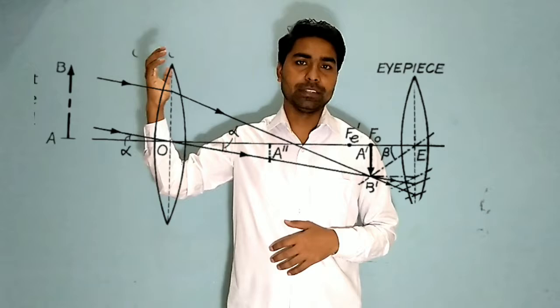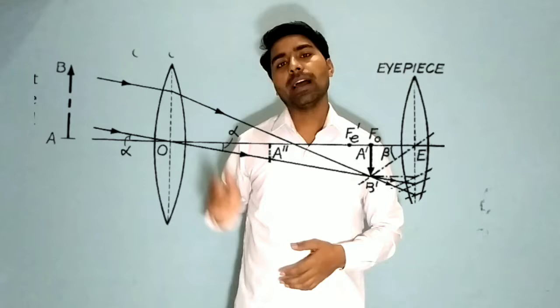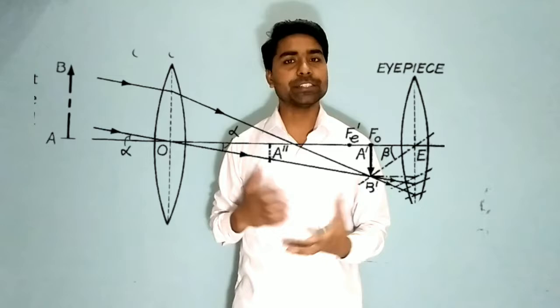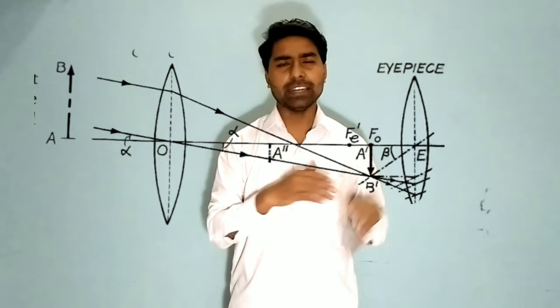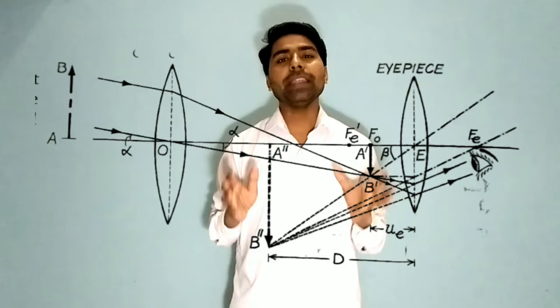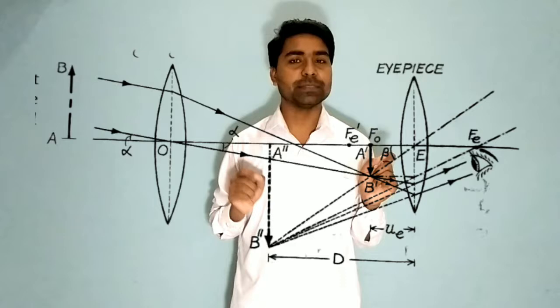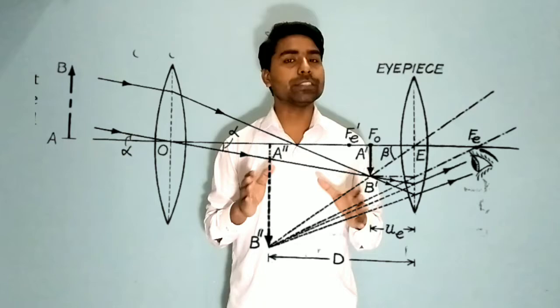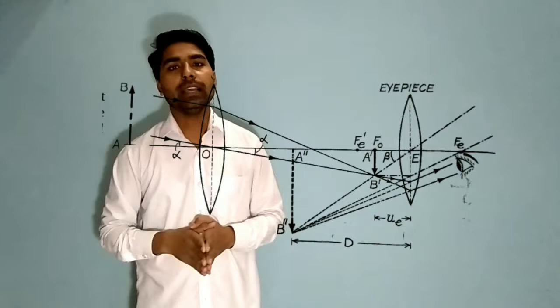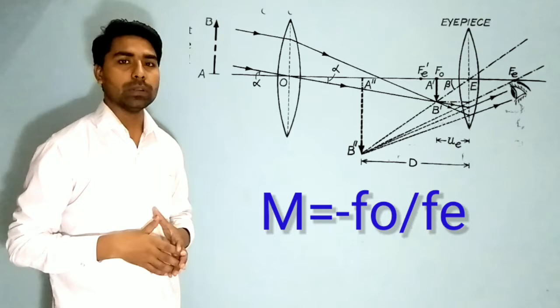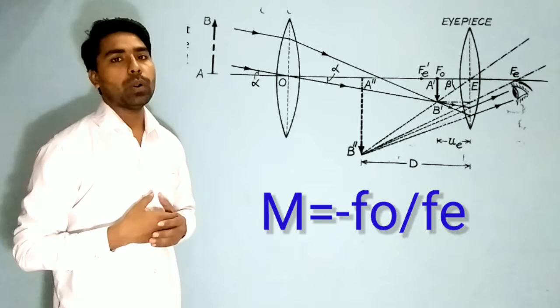In the refracting type telescope, the object is at infinity, meaning at a very far distance, and the rays coming from that object reach the objective lens. This objective lens has a larger focal length than the eyepiece lens, and finally you get a magnified image. The key point is that in this astronomical refracting telescope, the objective and the eyepiece both have different focal lengths, and this telescope has a magnifying power equal to fo upon fe.